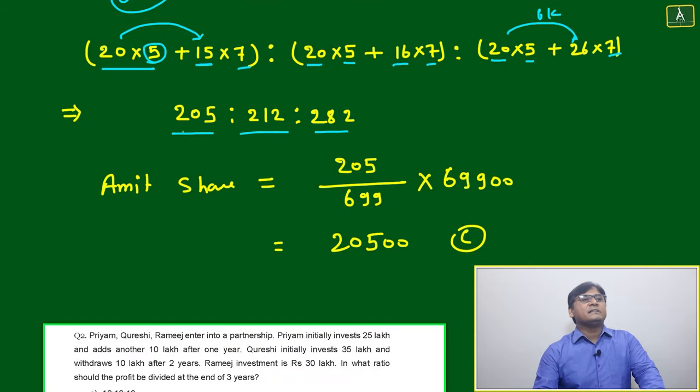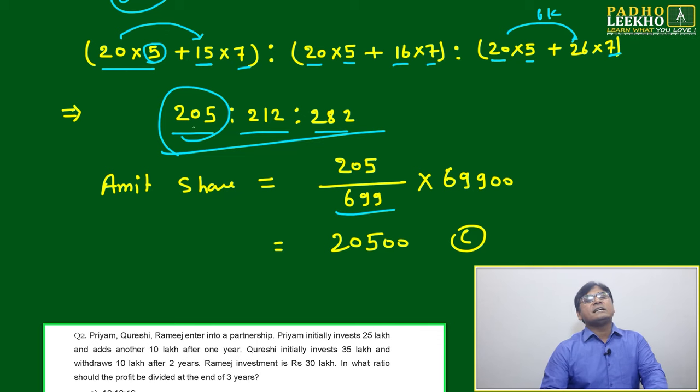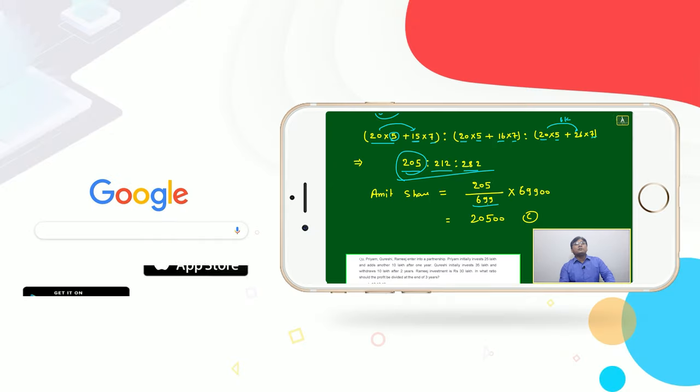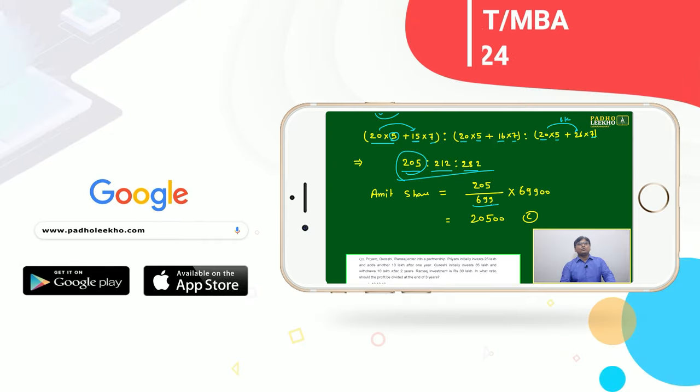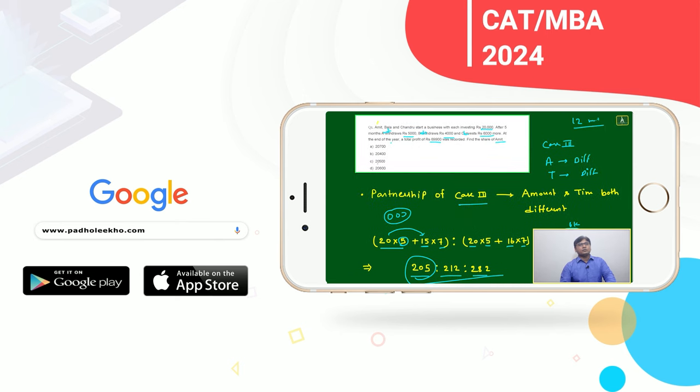Question is asking share of Amit. Amit's share means 205 out of total. 205, 212, 282 - it becomes 699. 205 out of 699, total profit is 69,900. It will become around 20,500.